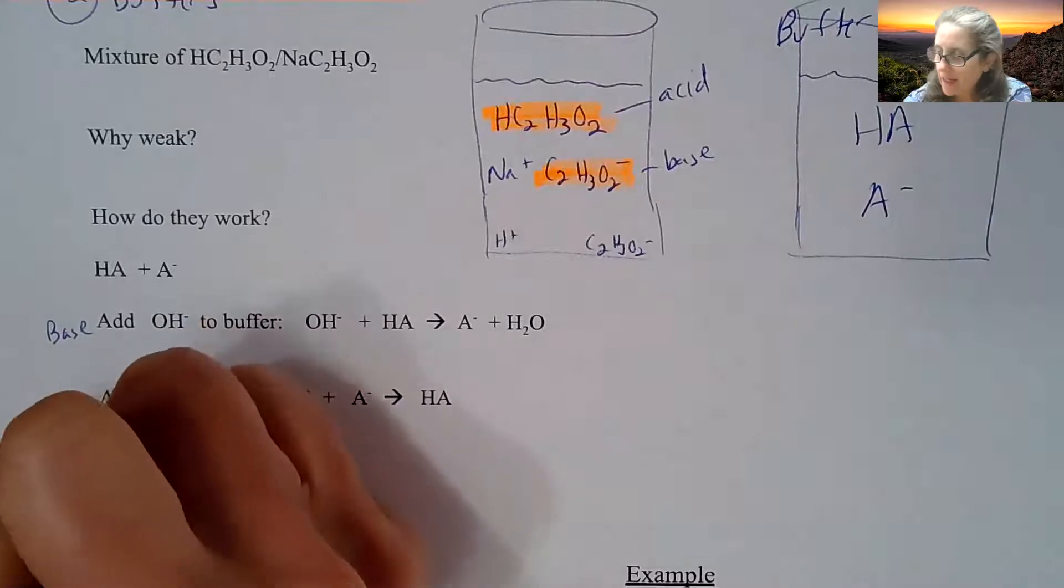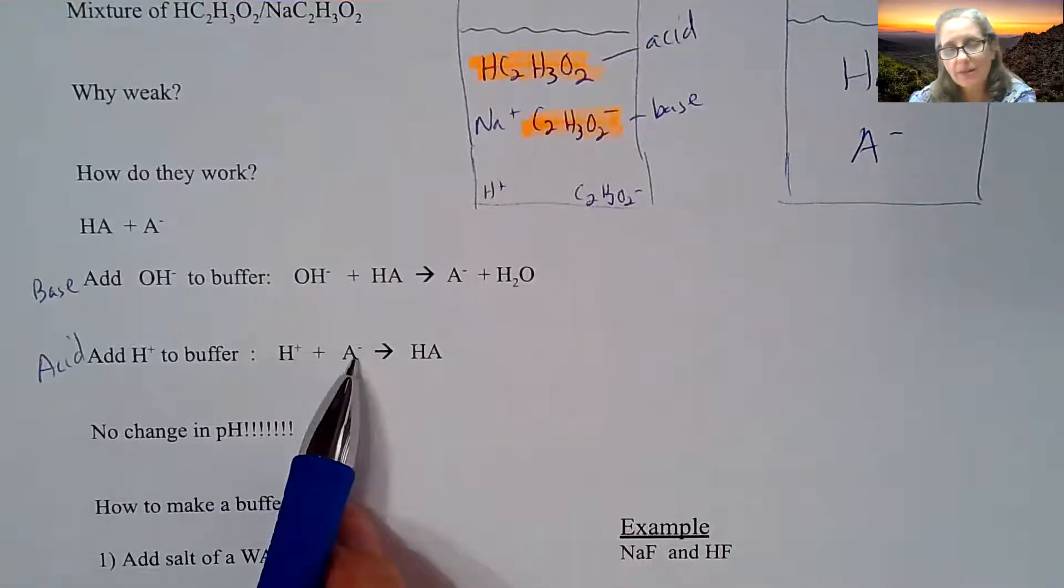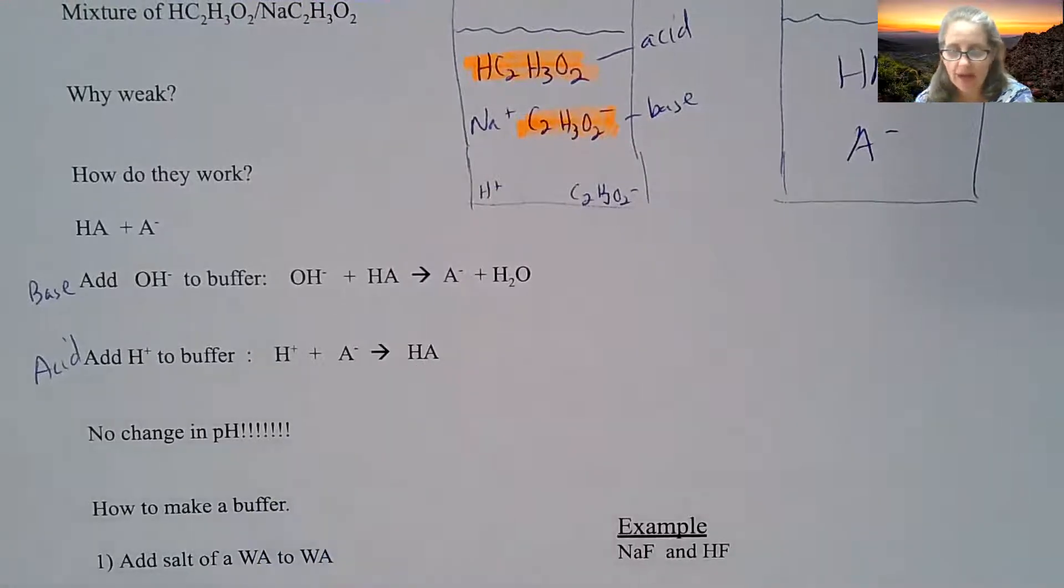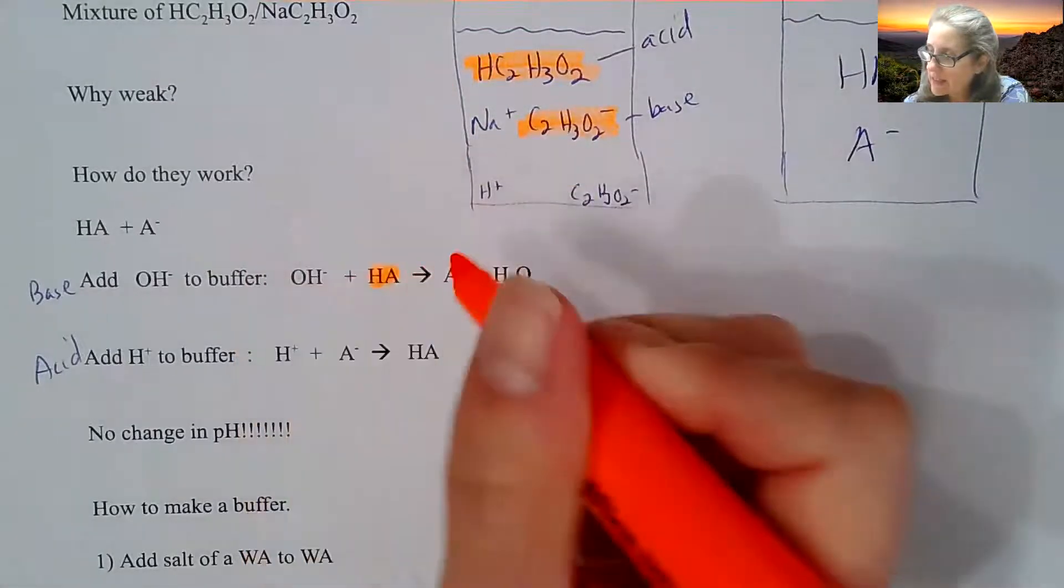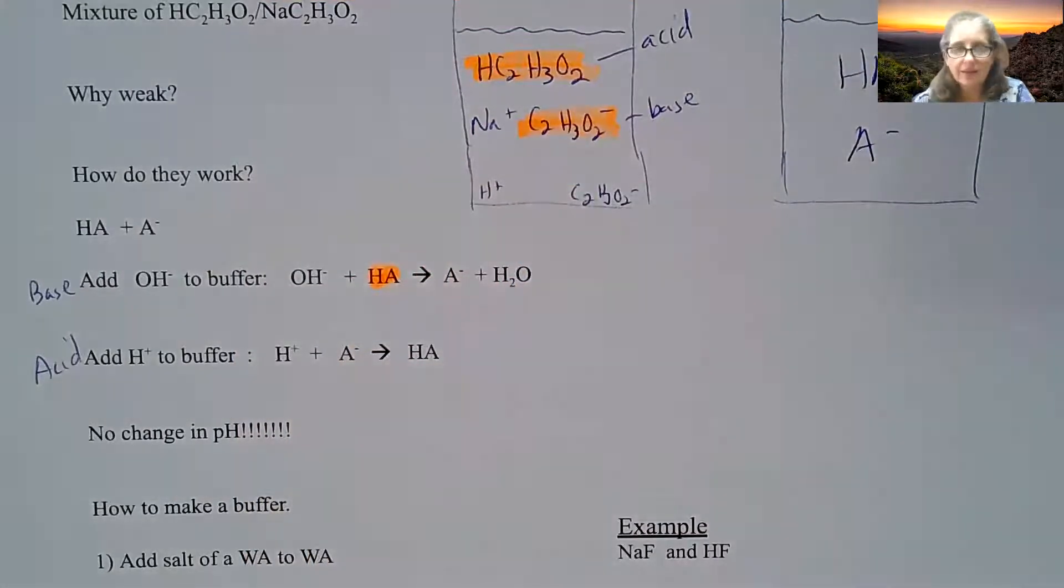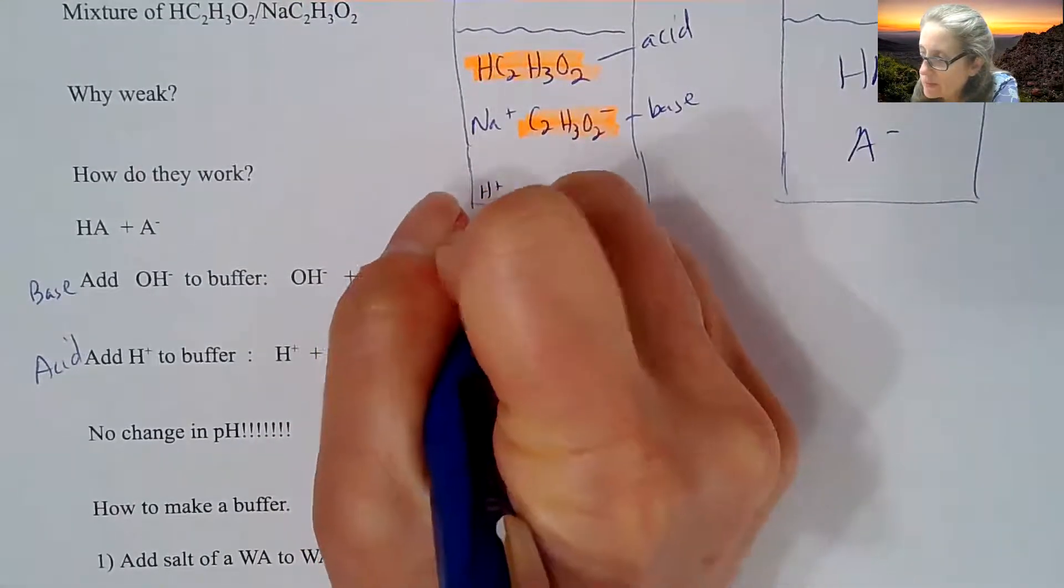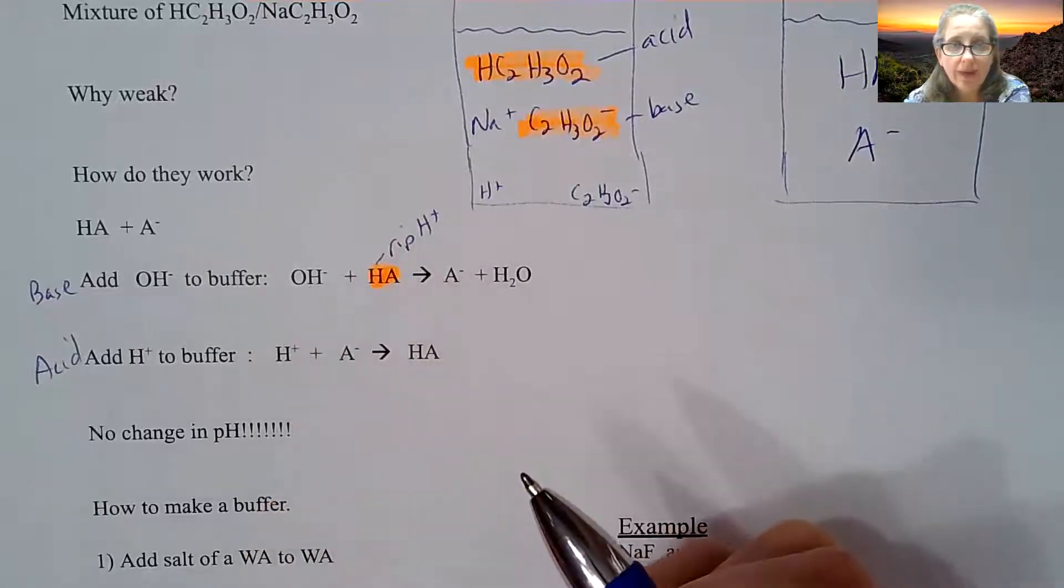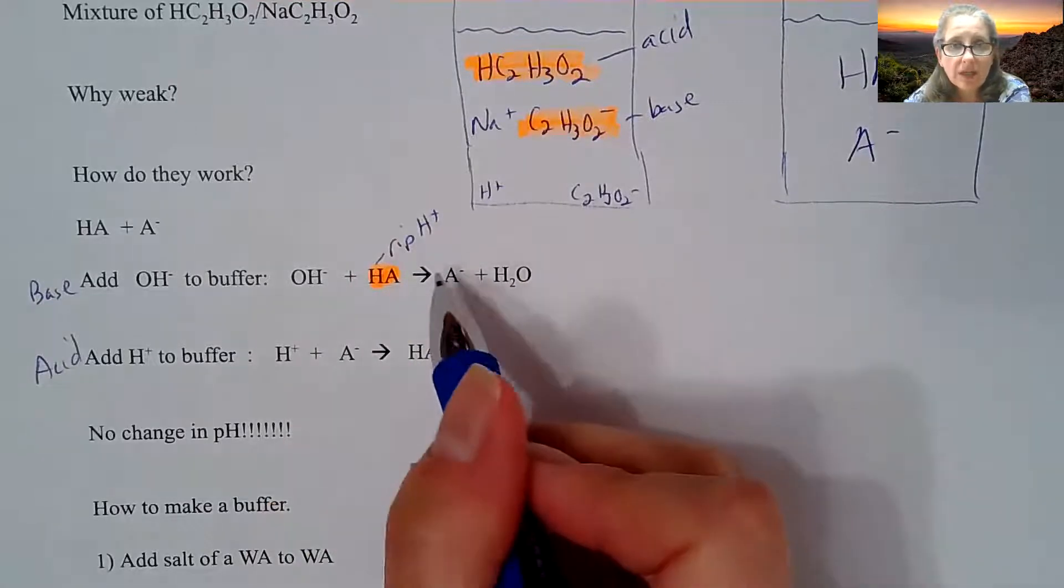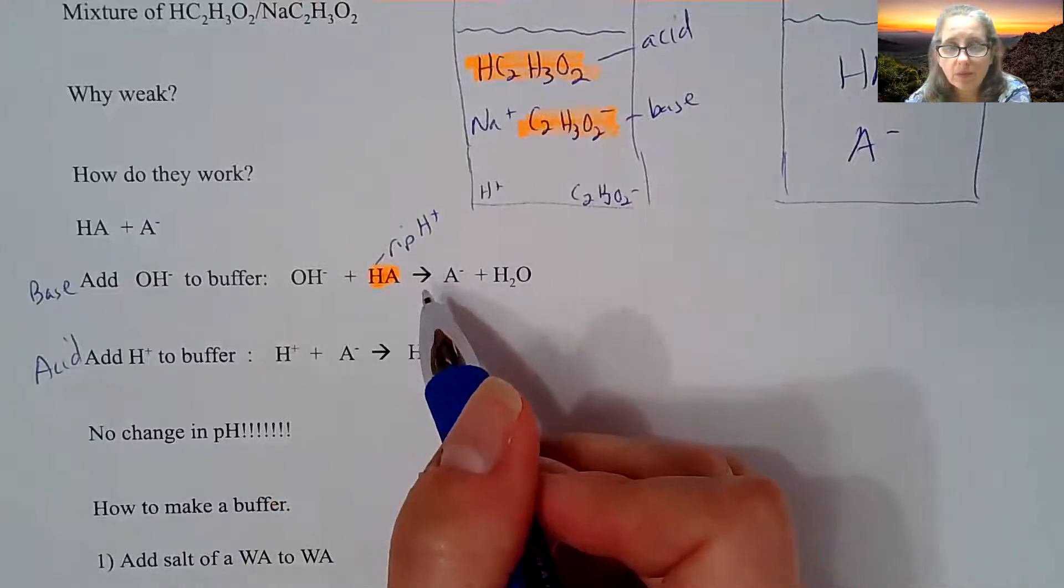If I add acid to a buffer, I'm adding H+, it's going to react with the A-, whatever the basic component is, and make more HA. When you are looking at buffers, realize that this is a weak acid, but realize that that H is going to be ripped off. It's going to rip off that H+ when you add that OH to it. So that's why it's going to force this to go one direction.